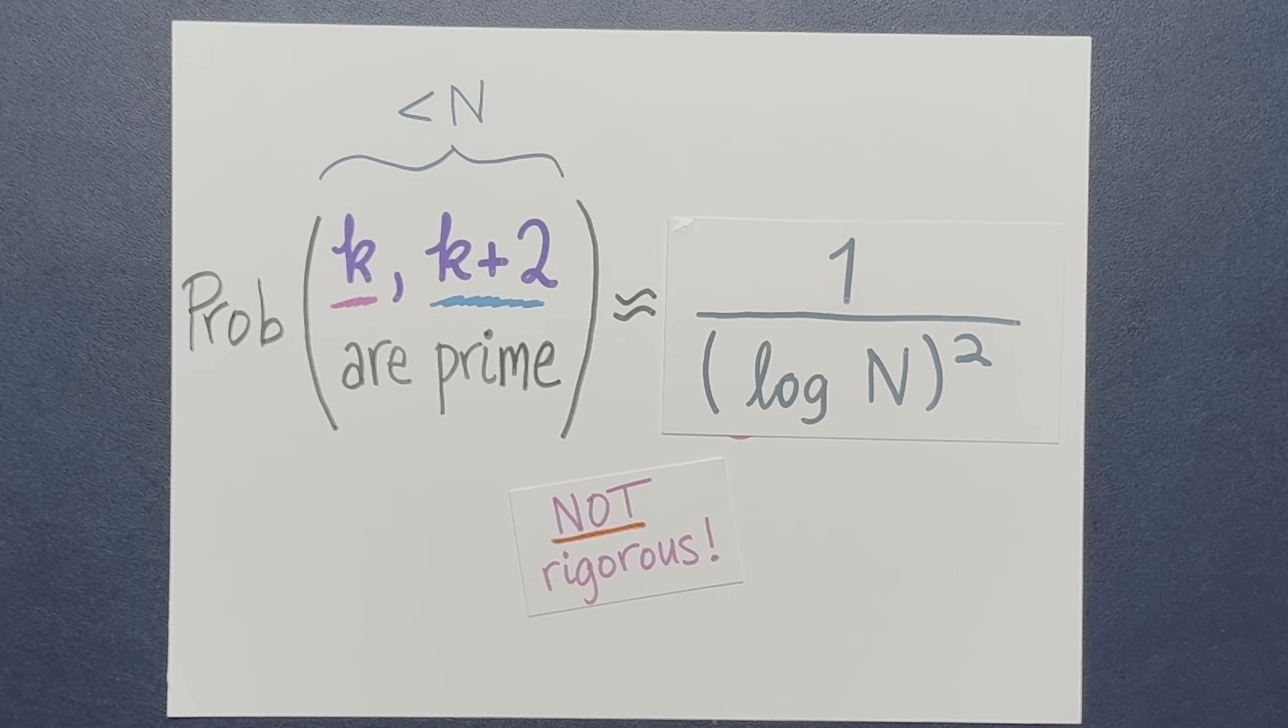Of course, this is not at all a rigorous calculation. However, this is not exactly correct because, of course, being a prime is not a random event. You could put this expectation into the question is p and p plus 1 prime and would get the same answer, which is of course wrong because p and p plus 1 can't be, apart from 2 and 3, can't be prime at the same time.